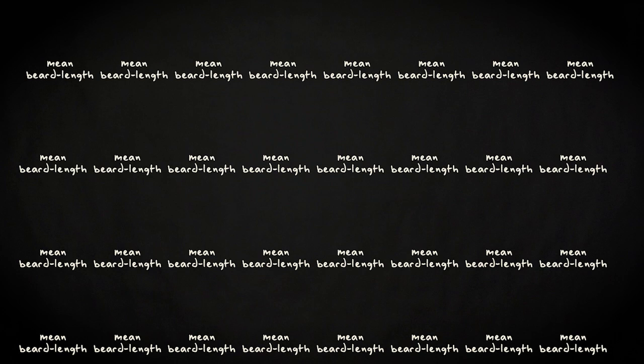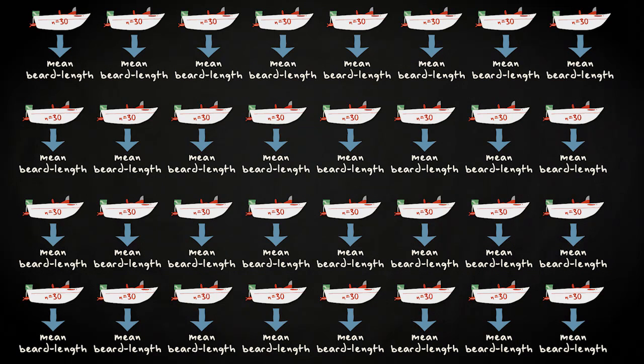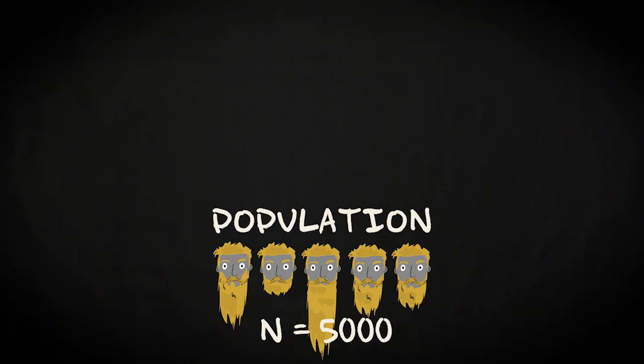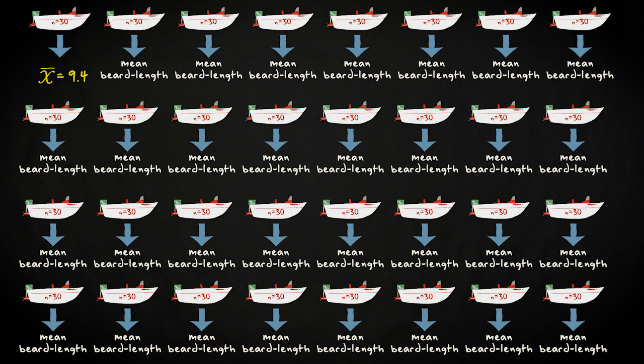Suppose you decide to measure the mean beard length for every boat. In every boat there are 30 people going to the Festival of the Beards. Now, imagine you know that the mean beard length in the population of 5,000 festival goers is 10.3 mm. So mu is 10.3 mm. You also know that beard length has a bell-shaped distribution in the population. In one boat you'll find a mean beard length of, say, 9.4 mm, and in another one, say, 10.8 mm.